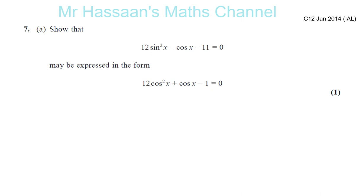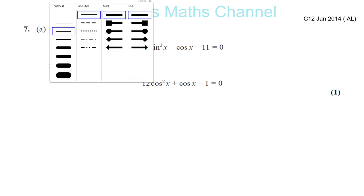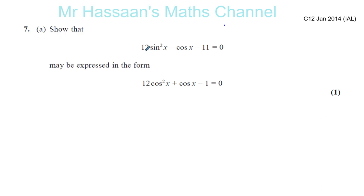First of all, it says show that 12 times sine squared x minus cosine x minus 11 equals 0 may be expressed in the form 12 cosine squared x plus cosine x minus 1 equals 0. The key thing to realize is that they want us to express this equation with the same trig function all the way through.